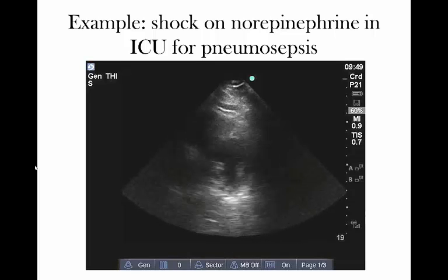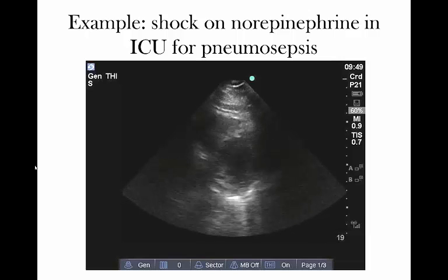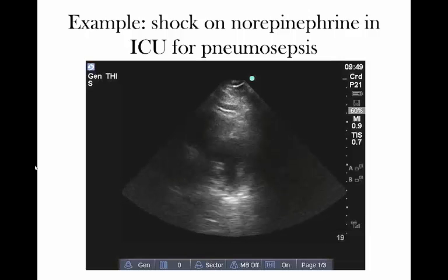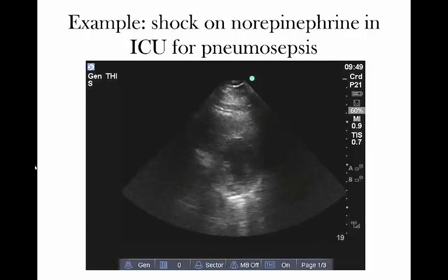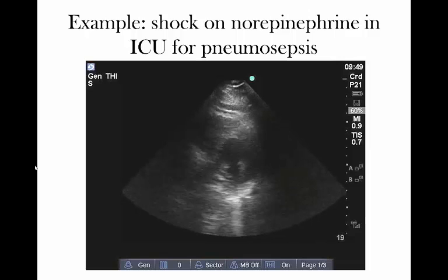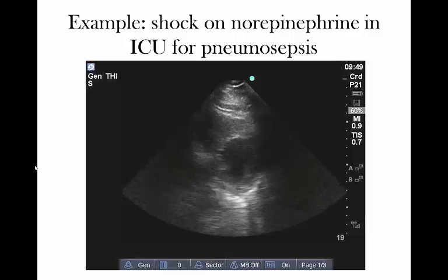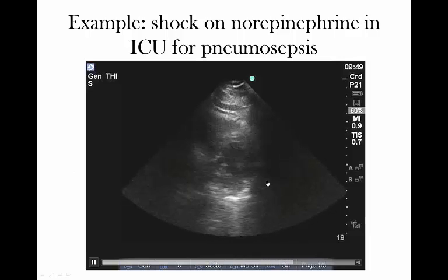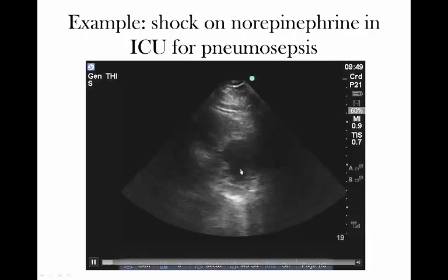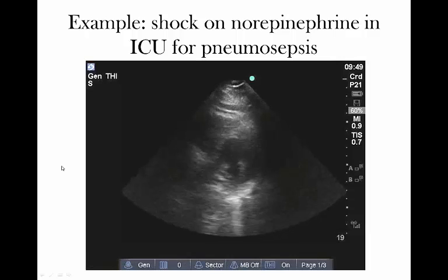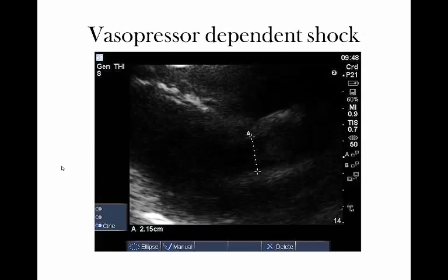Let's look at it again in a different case — a recent case regarding a patient with pneumosepsis in the ICU on norepinephrine for vasodilatory shock. The question was: can we alter the management at all? You can appreciate on this parasternal short axis, slowed down at the papillary muscle level, that contraction appears preserved and we would generally agree this is normal LV function. Going a bit deeper, we measure the LVOT diameter in the parasternal long axis and get 2.15 centimeters, which through the math gives us an area of 3.63 centimeters squared.